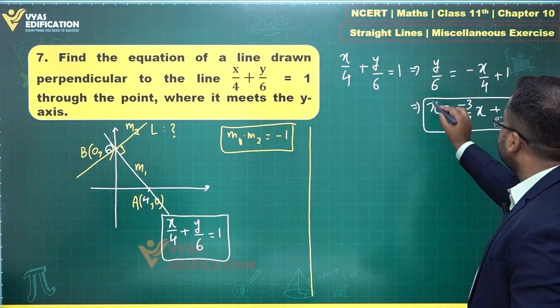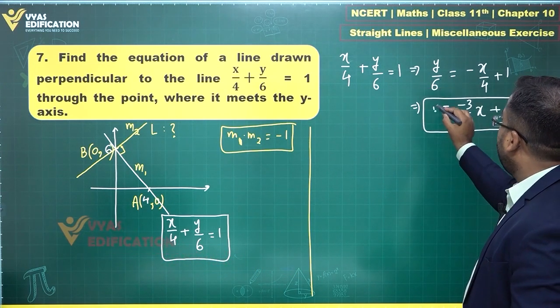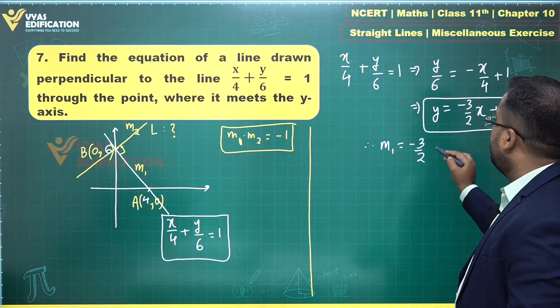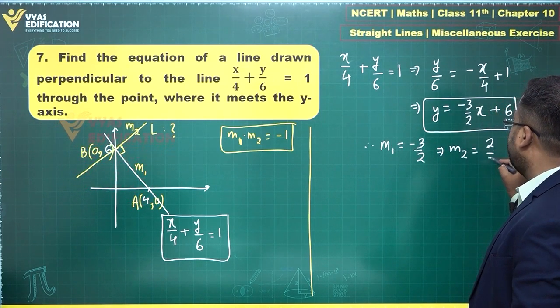This is actually y, so m1 = -3/2, which tells me m2 = 2/3.